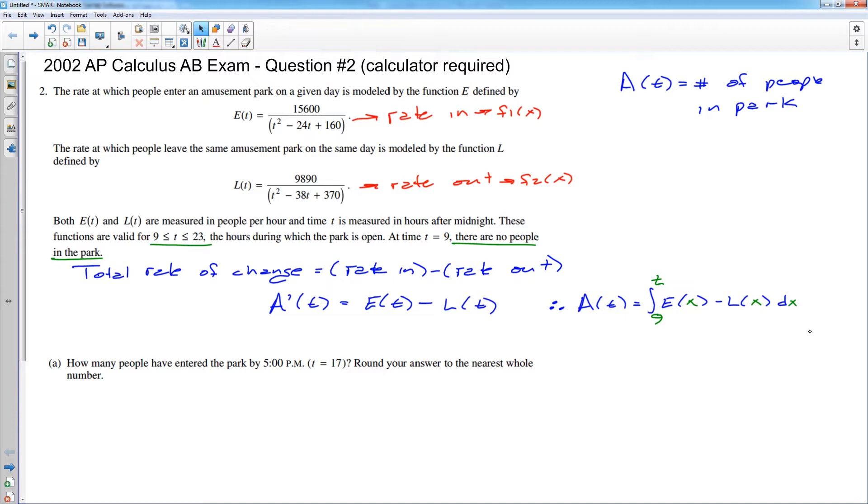They do tell you that we start with no people in the park. So if you wanted to really kill this thing dead, then you would say that this thing... Why can't I move everything over? But they do tell you that at time T is 9, there are no people in the park. So you need to consider that we are starting with nothing. And then this antiderivative will tell you the change in the number of people. And so that would give you your total number of people.